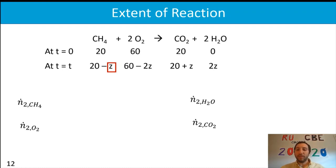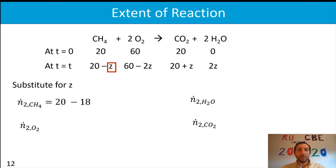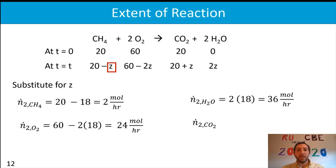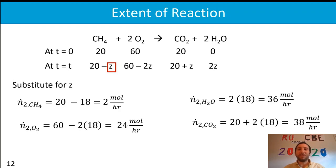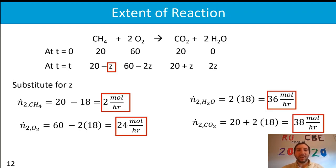Now we substitute z = 18 into each extent of reaction equation to find the final composition. Methane: 20 − 18 = 2 moles per hour. Oxygen: 60 − 2×18 = 24 moles per hour. Water: 2×18 = 36 moles per hour. Carbon dioxide: 20 + 1×18 = 38 moles per hour. (Note: the stoichiometric coefficient for CO₂ is 1, not 2.) All final values are now solved.